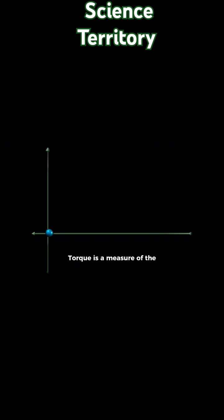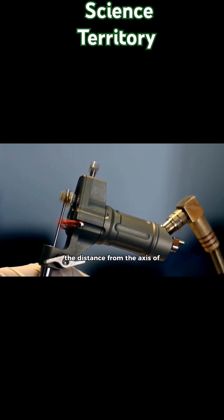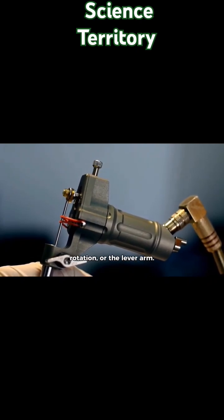Let's break it down for you. Torque is a measure of the rotational effect of a force applied to an object. It's the force multiplied by the distance from the axis of rotation, or the lever arm.